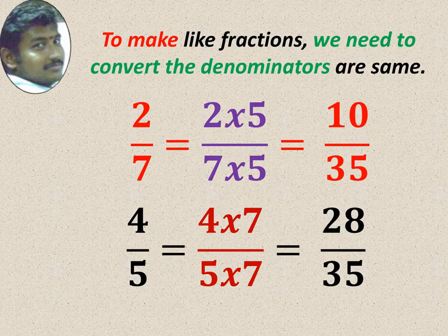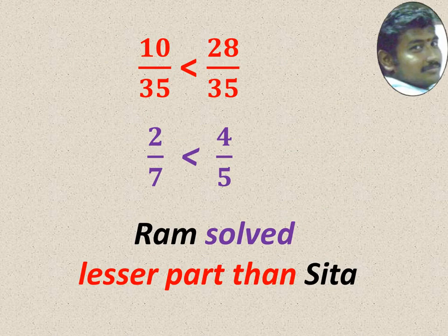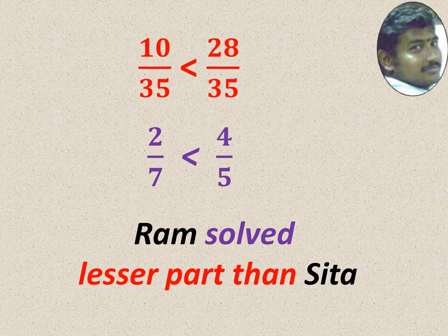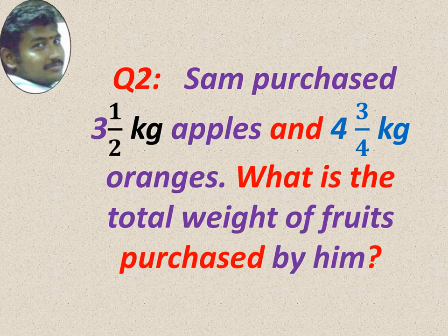Easily now, we can compare which is greater. 28 by 35 is greater. So 2 by 7 is smaller. 2 by 7 solved by Ram. So Ram solved lesser part than Seta. 2 by 7 is less than 4 by 5. Hope you understand how to solve it. Let's see next.